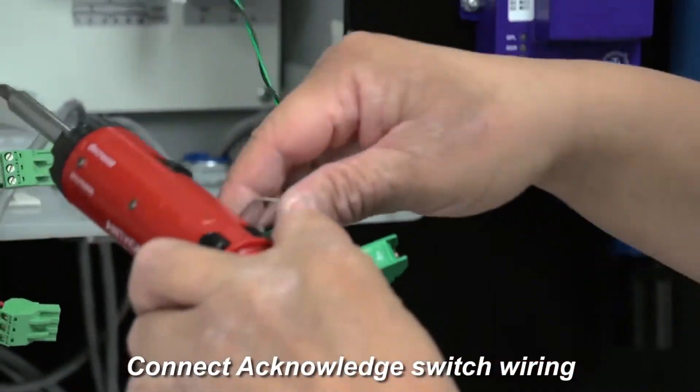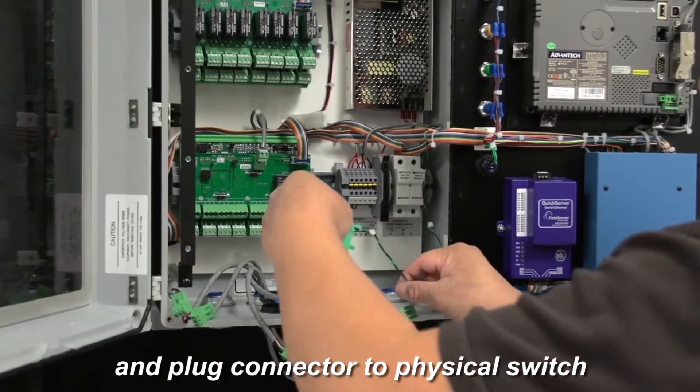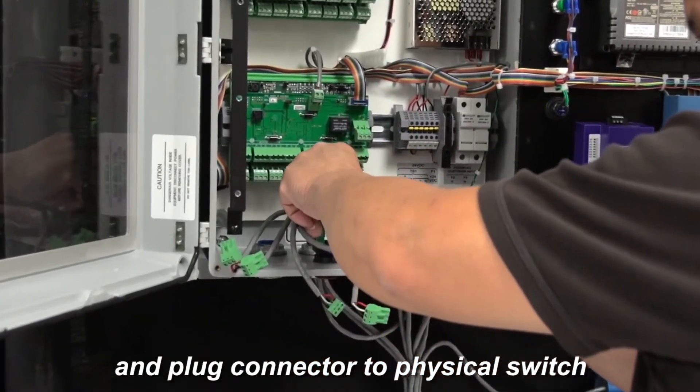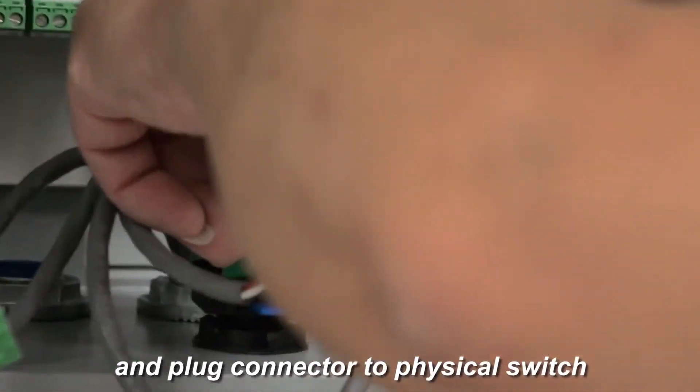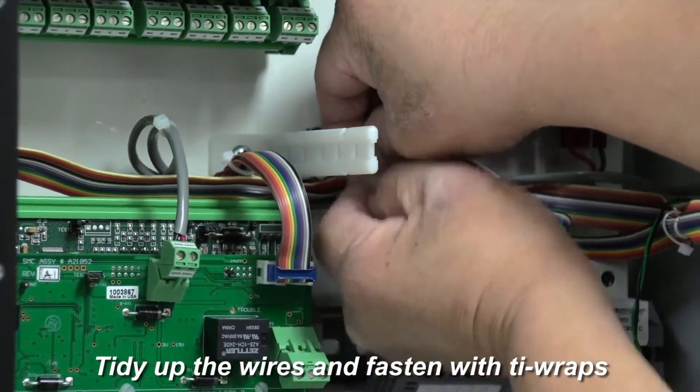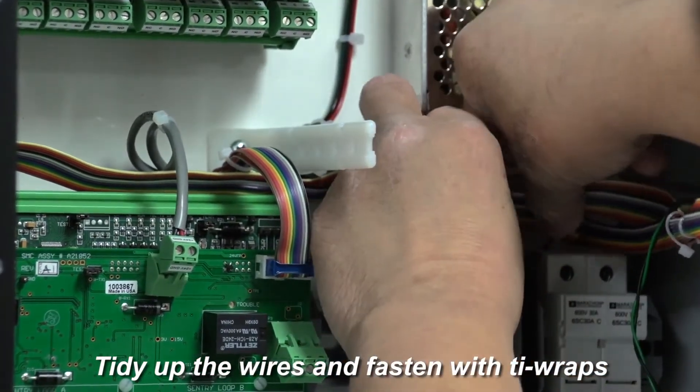Connect the acknowledge switch wiring to the switch you removed earlier and then plug it into the acknowledge switch on the bottom of the enclosure. Then, tidy up all the wiring and fasten them down using the tie wraps provided on the upgrade kit.